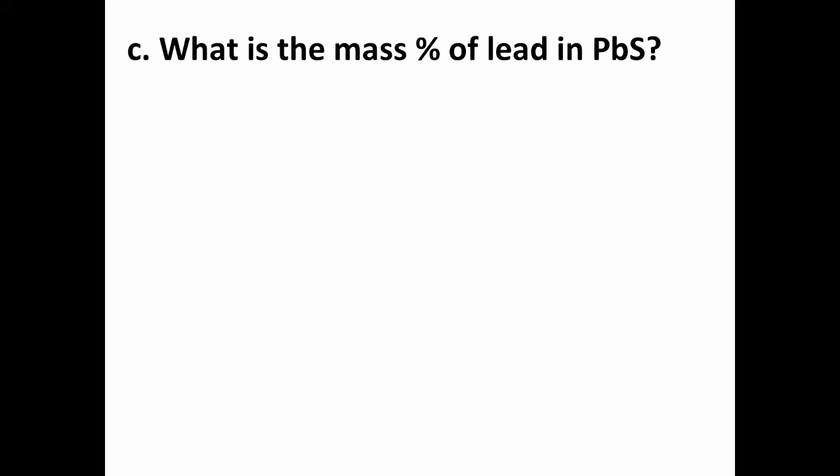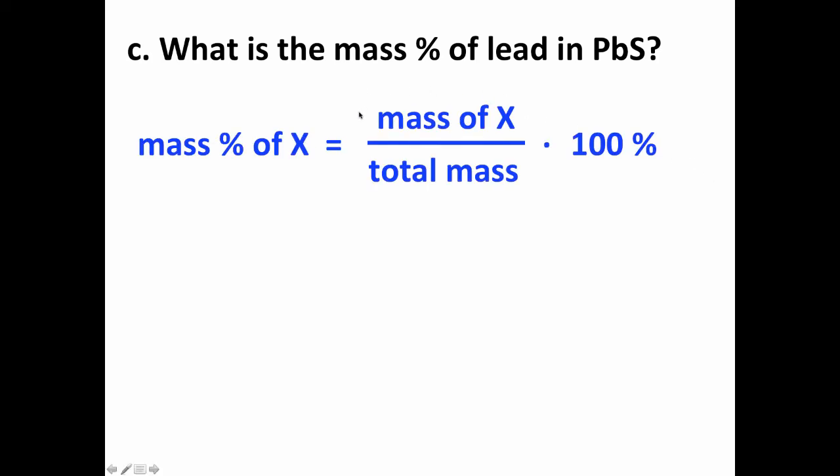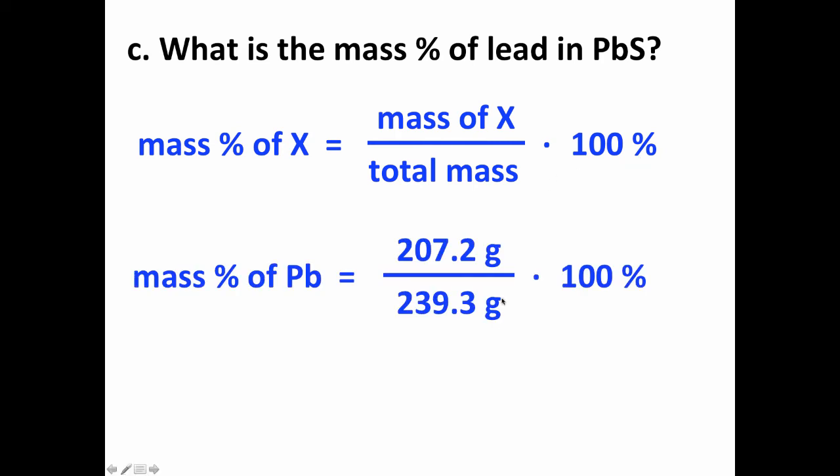Now how about mass percent? Well, the mass percent of anything is going to be the mass of that substance—in this case lead—compared to the mass of the entire compound, in this case the lead sulfide, and then multiply by a hundred to make it a percent. So specifically, since one mole of lead sulfide weighs 239.3 grams, so we're choosing that as our amount of substance, one mole of it is going to contain one mole of lead which weighs 207.2 grams. And then when you divide those two and multiply by a hundred, you get 86.59 percent. And that is the mass percent of lead in this compound.